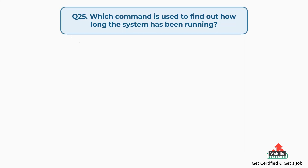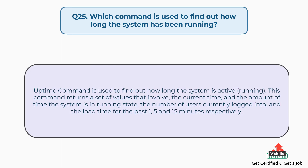Question number twenty-five: which command is used to find out how long the system has been running? The uptime command is used to find out how long the system is active. This command returns values including the current time, the amount of time the system has been running, the number of users currently logged in, and the load time for the past 1, 5, and 15 minutes respectively.